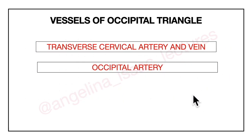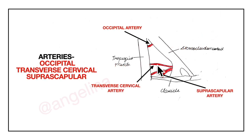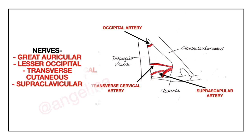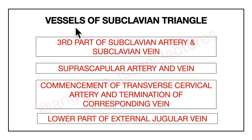After having learnt about the nerves, let's learn about the vessels. The occipital triangle contains the transverse cervical artery and vein and the occipital artery. The subclavian triangle contains the third part of the subclavian artery and subclavian vein, the suprascapular artery and vein, the commencement of the transverse cervical artery and the termination of the transverse cervical vein, and the lower part of the external jugular vein.